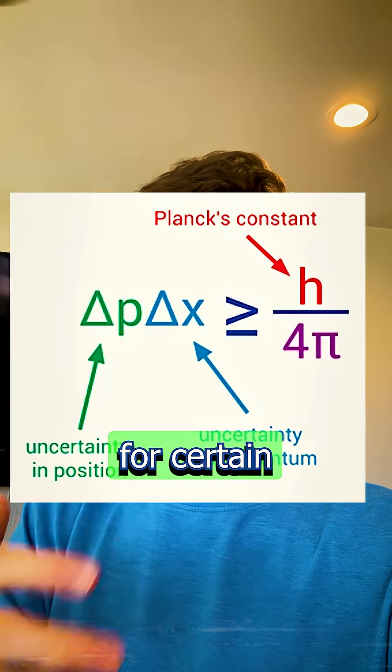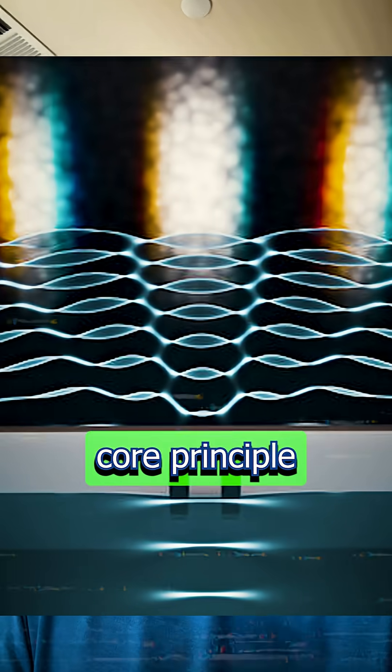In fact, we can't determine where an electron is at all. What I mean is we can't know for certain without sacrificing something else. This is a core principle of quantum physics.